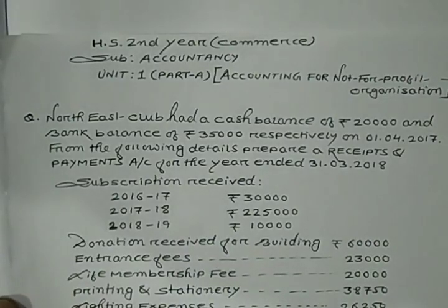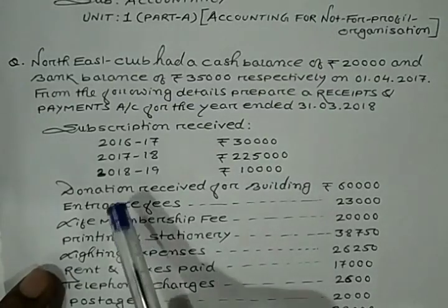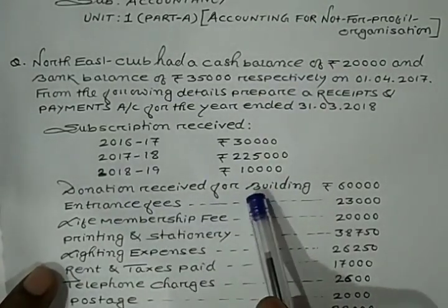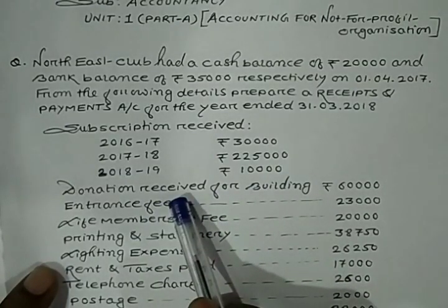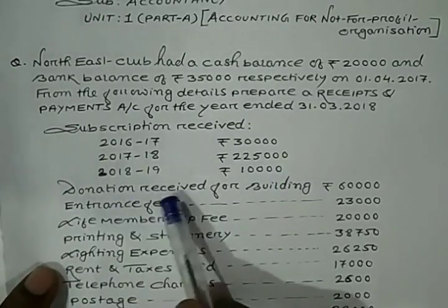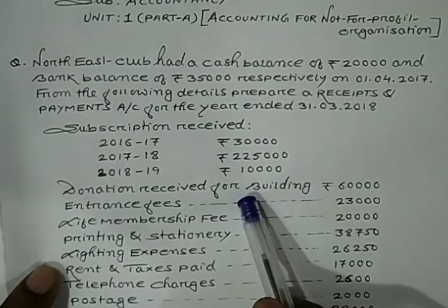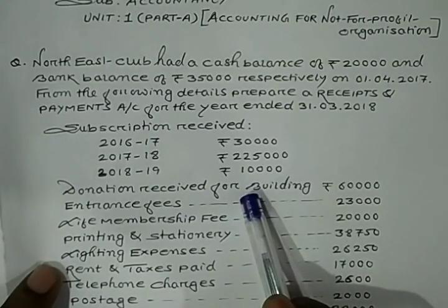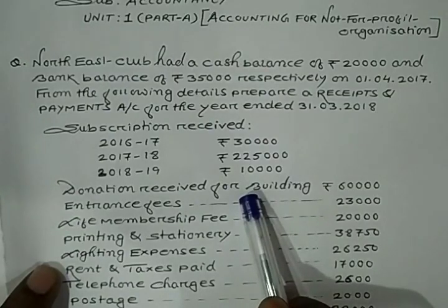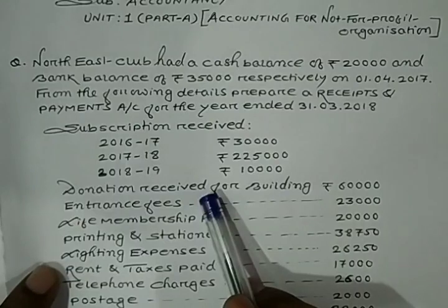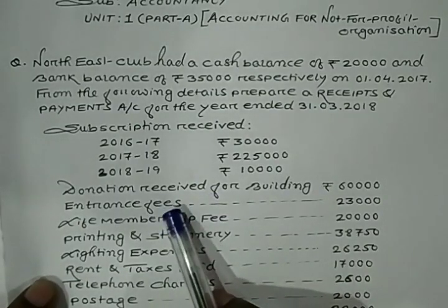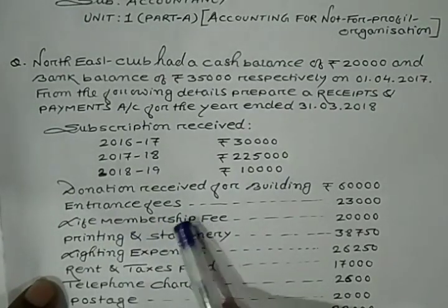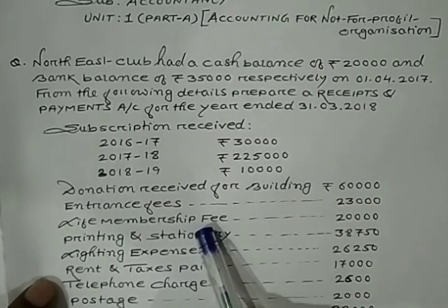Next point given is donation. Donation received for building — since it is received, you record it on the debit side of Receipt and Payment Account. Donation received for building is of capital nature because it is for a long-term purpose. Whatever is long-term is capital nature; short-term is revenue nature. Entrance fee is also received, so it will also be recorded on the debit side. Life membership fee is also received, so it also goes on the debit side.